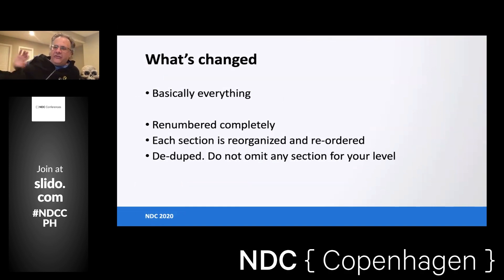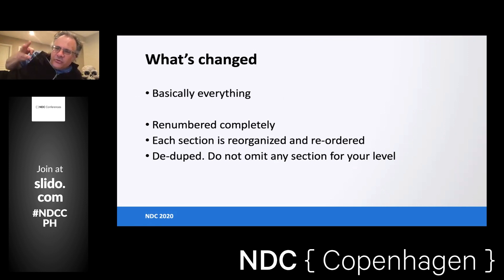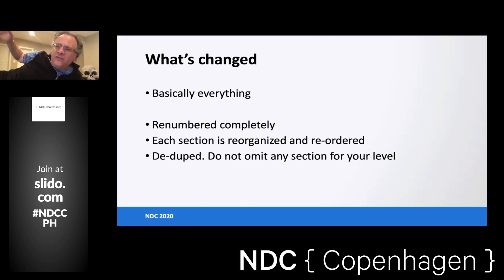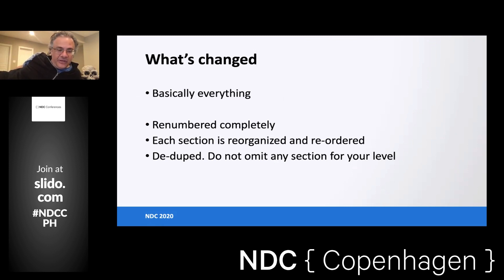So what's changed? Everything. We renumbered everything from scratch. Numbering matters — because over several versions, as requirements were removed, we ended up with requirement numbers like one, three, nine, eleven with a lot of gaps. So for ASVS 4.0, we wiped the slate clean and renumbered everything from scratch. Each section is reorganized and reordered, and we got rid of a lot of duplications.